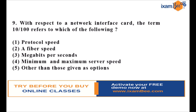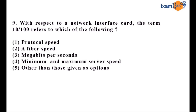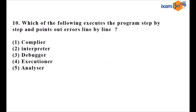Question nine says: with respect to a network interface card, the term 10 or 100 refers to which of the following? The answer is megabits per second. These numbers represent the transfer rate — data transfer takes place at 10 Mbps or 100 Mbps. The answer is option three.